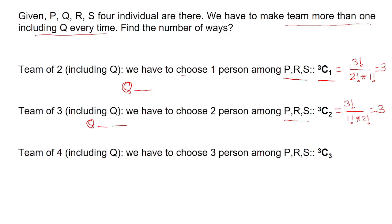Next condition would be we can form a team including maximum number of people, that is 4, and Q will always be there. So we can choose 3 people out of P, R, S. That is 3C3, and it will be equal to 3 factorial divided by 0 factorial multiplied by 3 factorial, and it would be equal to 1.